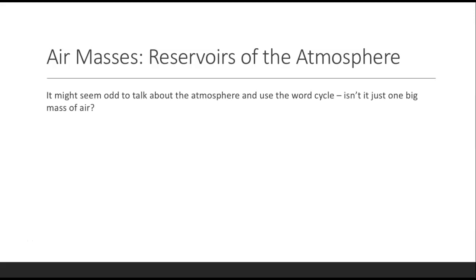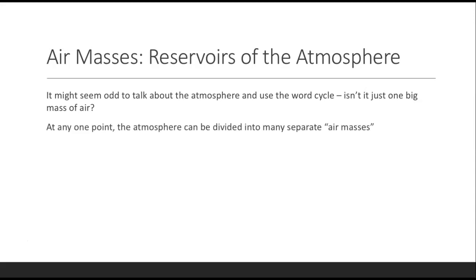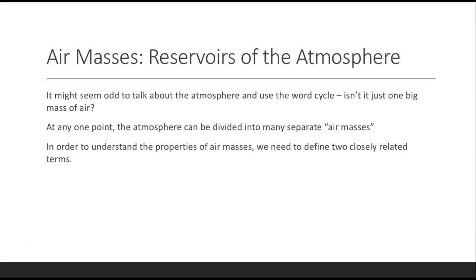It might seem odd to talk about the atmosphere and use the word cycle, because doesn't it just appear to be one big mass of air? The air in one place is the same as the air in another place, right? But at any one point, the atmosphere can be divided into many separate, what are called air masses. And in order to understand the properties of air masses, we first need to define two closely related terms.